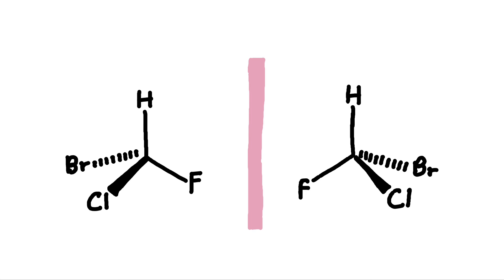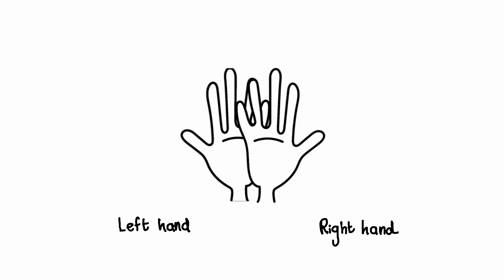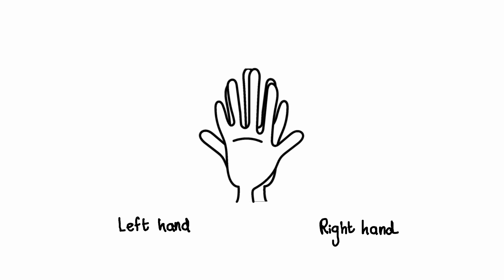Chirality refers to a property of molecules that are non-superimposable on their mirror image. This is much like the left hand and the right hand. They cannot be superimposed onto each other. They're mirror images of each other.